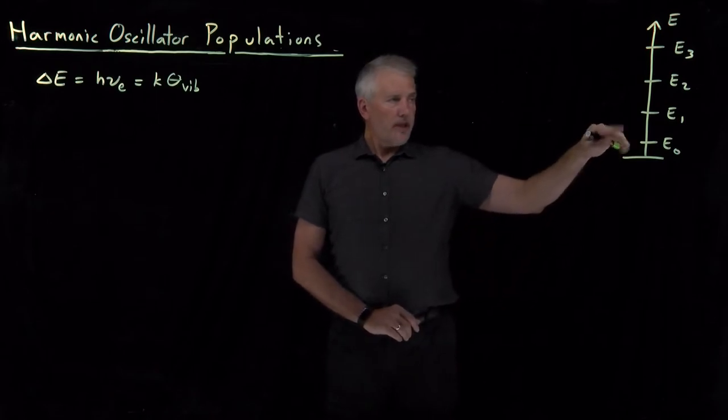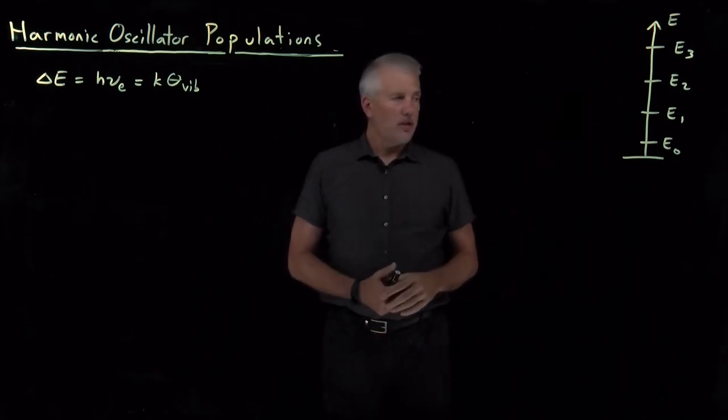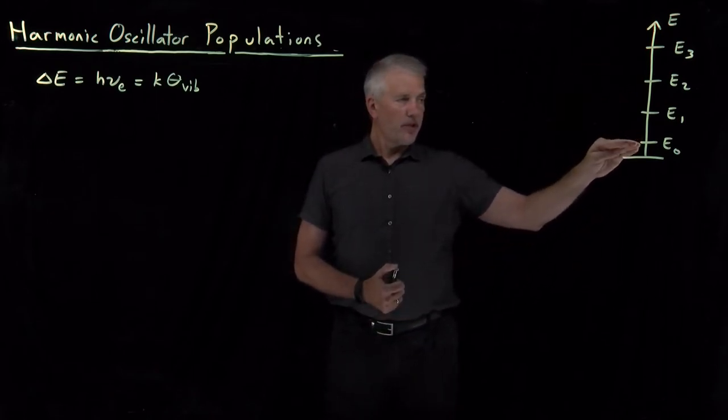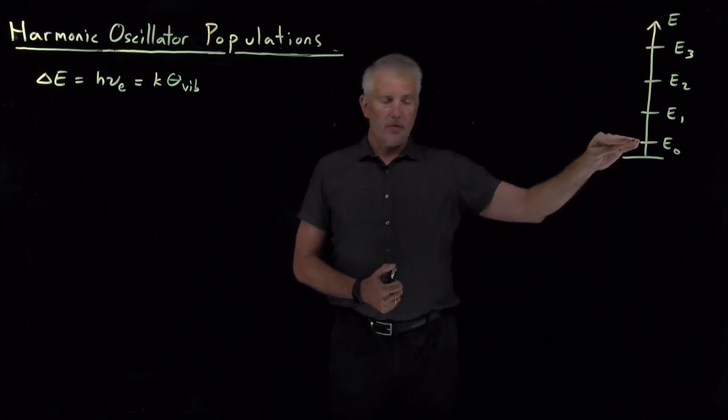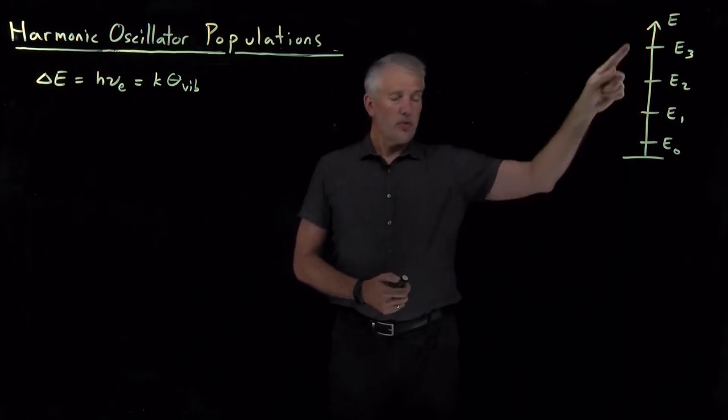We know harmonic oscillators have equally spaced energy levels. The selection rules tell us we can make transitions that only change our level by one. We can gain one from zero to one, one to two, two to three.